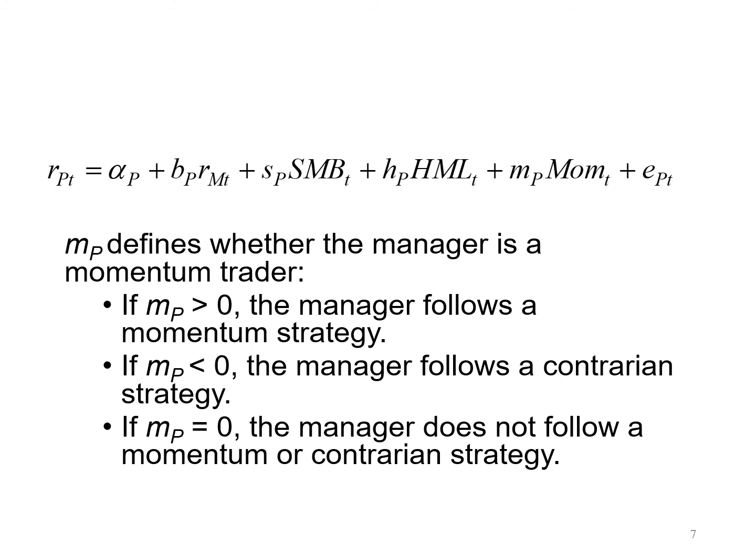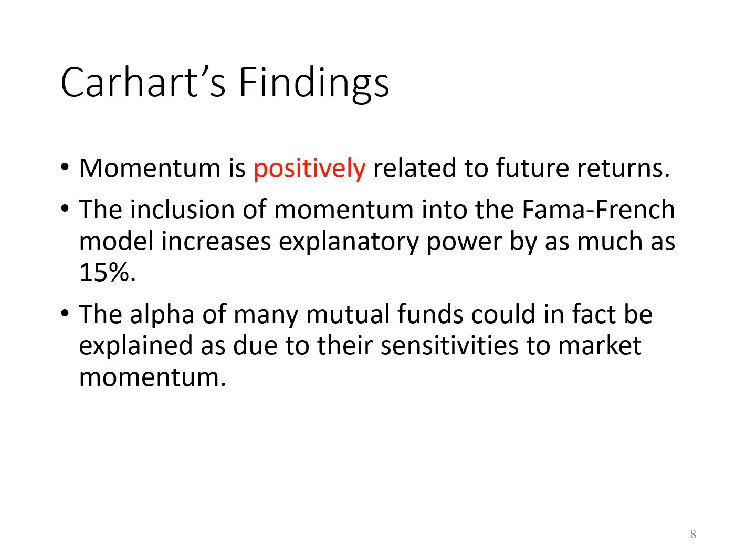We will learn more about momentum and contrarian strategy later. Carhart finds that momentum is positively related to future returns. He demonstrates that the typical factor sensitivity for the momentum variable is positive. Its inclusion into the Fama-French model increases explanatory power by as much as 15%. Carhart finds that much of what appeared to be the alpha of many mutual funds could in fact be explained as due to their sensitivities to market momentum.